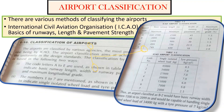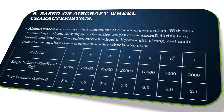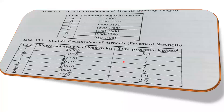For a single isolated wheel load of 45,000 kg, the tire pressure has to be 8.5 kg/cm². For code number two, it has to be 34,000 kg with a tire pressure of 7 kg/cm². Thus an airport classified as B2 would have a basic runway length of 1500 to 2099 meters and be capable of handling a single isolated wheel load of 34,000 kg with a tire pressure of 7 kg/cm². You can present these values in a table using the code letters and numbers.